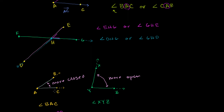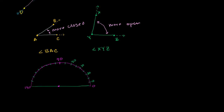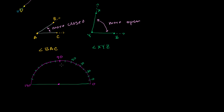What I want to do in this video is come up with an exact way to measure an angle. What I've drawn over here is a little bit of a half circle, and it looks very similar to a tool that you can buy at your local school supply store to measure angles. This is actually a drawing of a protractor. We've taken a half circle and divided it into 180 sections.